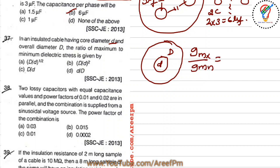The maximum stress is available on the conductor surface and the minimum stress is available on the outer conductor surface. So the ratio G_max to G_min is D/d. The answer is D/d.